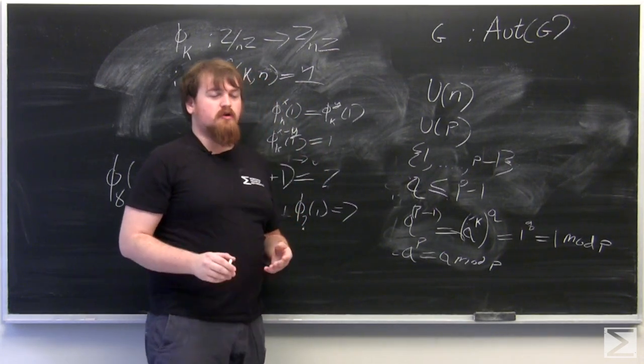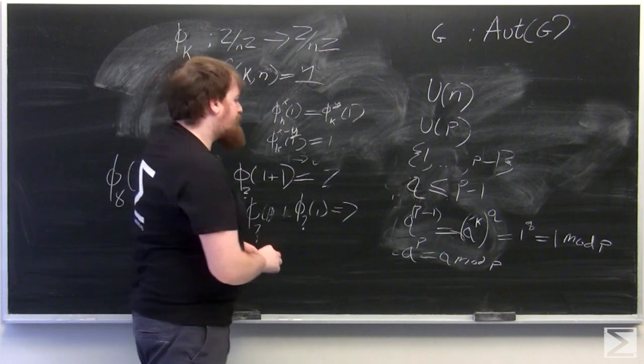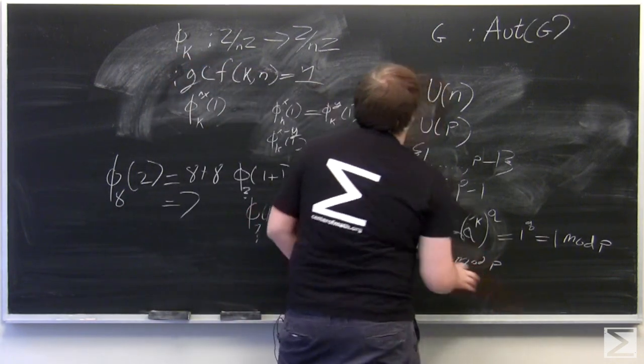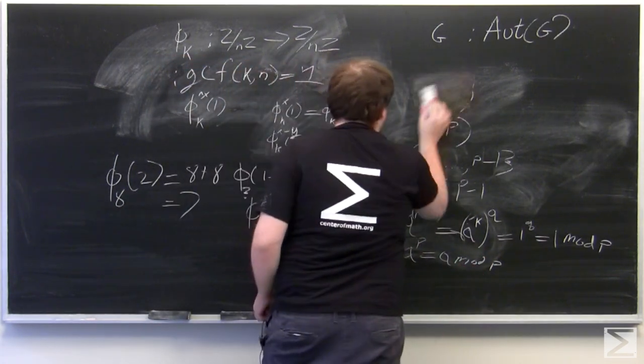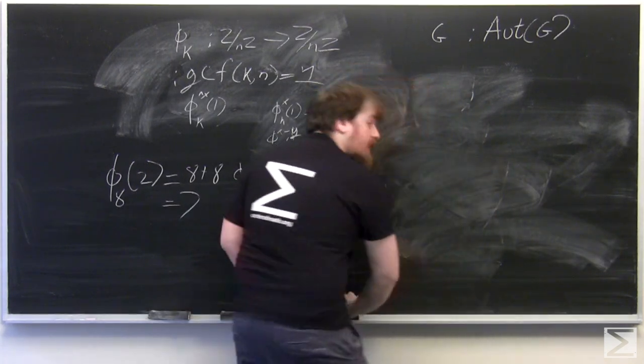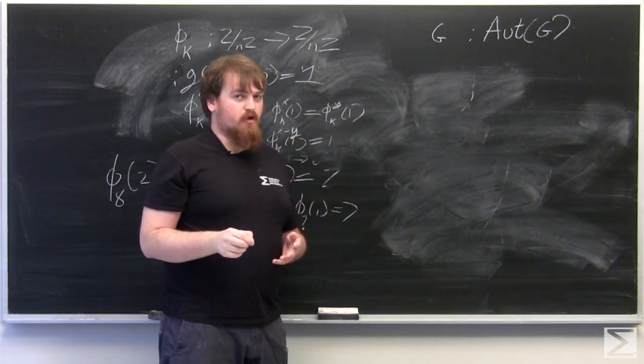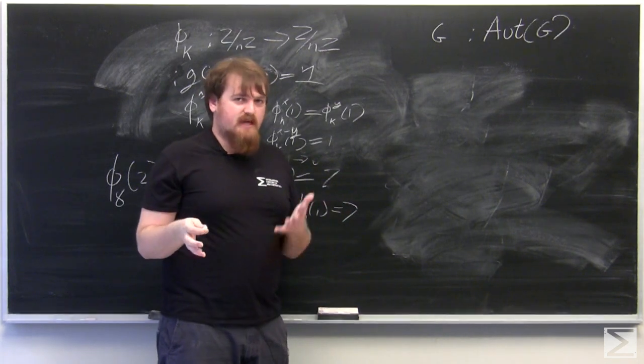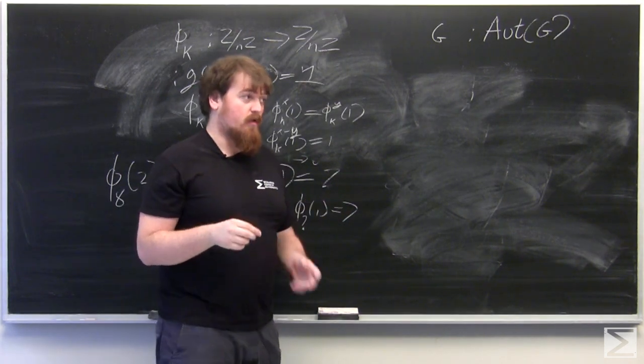So far, I've been talking about automorphism groups of cyclic groups. But if we look at the automorphism groups of a non-cyclic group, some interesting things start to happen. Cyclic groups have abelian automorphism groups, but not all abelian groups even need to have abelian automorphism groups.